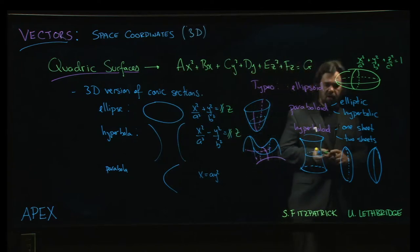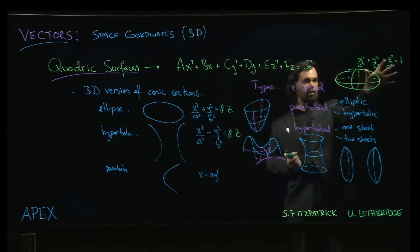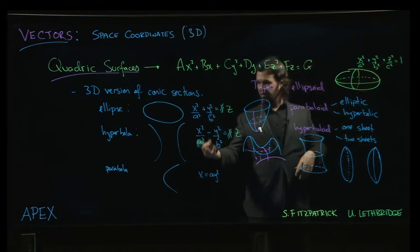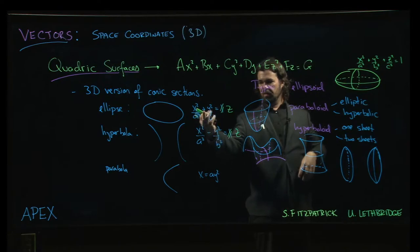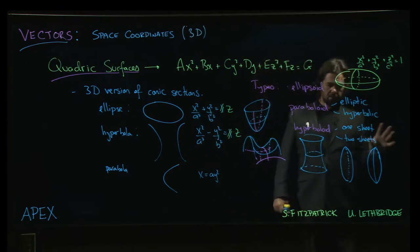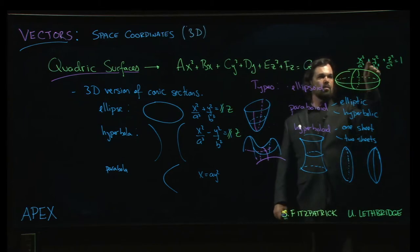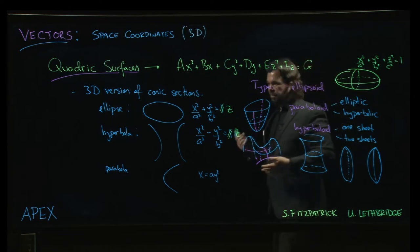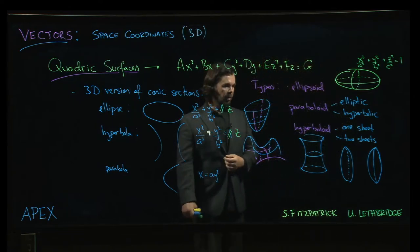When you get to the hyperboloids, you start with the ellipsoid equation and you change some of the signs, just like we do here with the ellipse and the hyperbola - plus goes to minus and that gives you a hyperbola. With a hyperboloid, if you change one of the pluses to a minus you'll get a hyperboloid of one sheet. If you change two of the pluses to minuses, you'll get a hyperboloid of two sheets. That's a good rule of thumb.